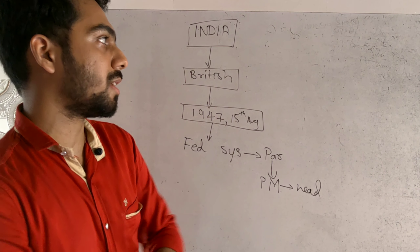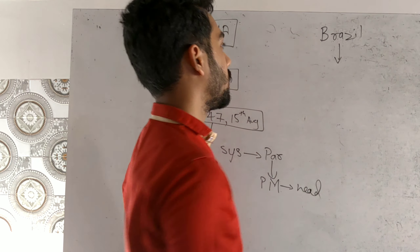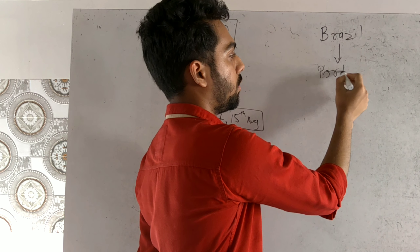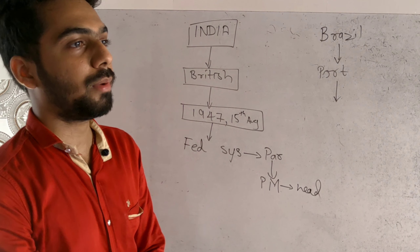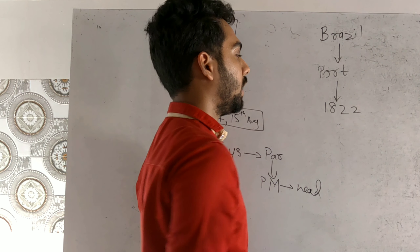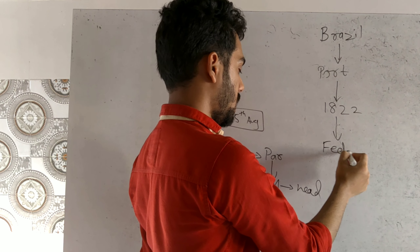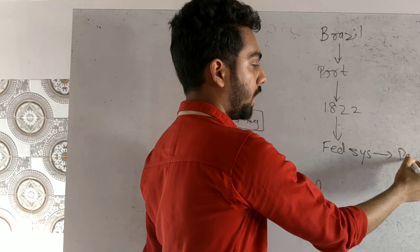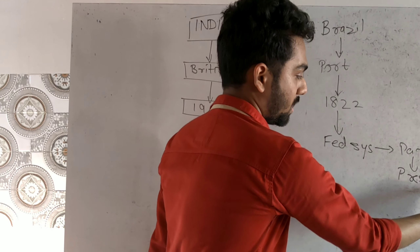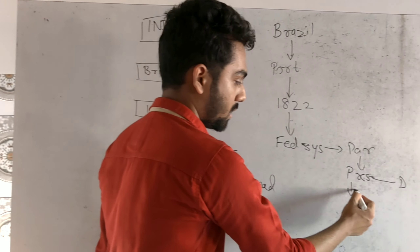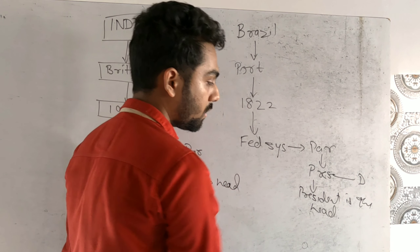Now we are going to see the Brazil system. Brazil was under the Portuguese rule. Similarly, as India got independence, Brazil also got independence — Brazil got independent in 1822. They are also having a federal system, but it is having the head as a president — a presidential democracy has been established where the president is the head of the nation.